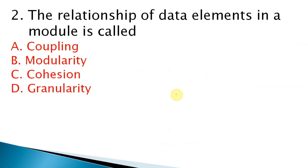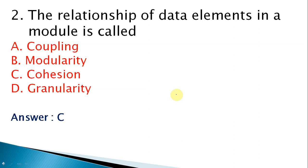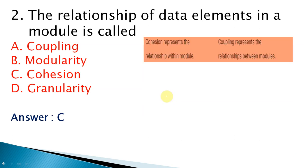Second question: the relationship of data elements within a module is called — options are coupling, modularity, cohesion, and granularity. The correct answer is C, cohesion. Cohesion represents the relationship within the module — it is the logical connection inside the module.